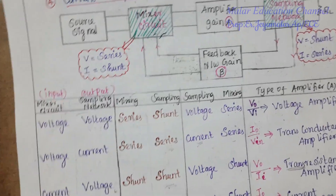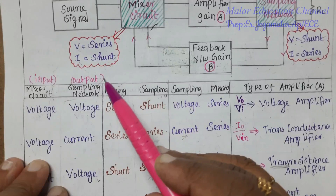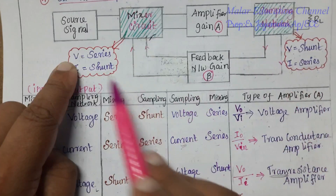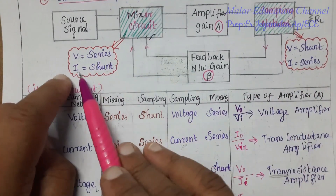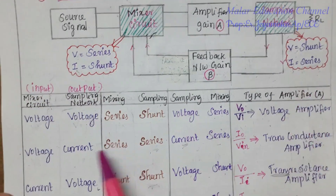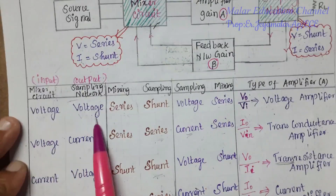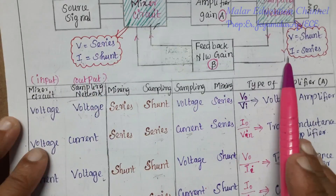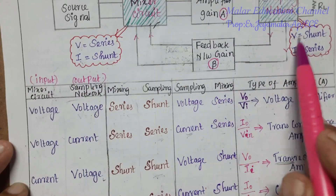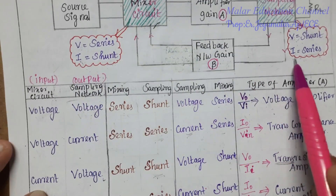Looking at the table: mixer circuit is input, sampling network is output. The four combinations are: voltage-voltage, voltage-current, current-voltage, and current-current. So for input/output: V-in with V-out, V-in with I-out, I-in with V-out, and I-in with I-out.